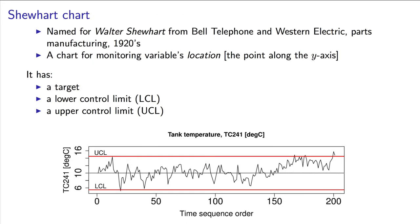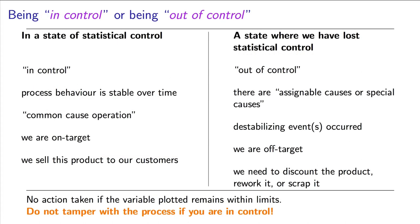This chart that we've just used is called the Shewhart chart, named after Walter Shewhart from the Bell Telephone Company, who developed it in the 1920s to monitor the production of parts at the phone company. It is a chart for monitoring the location of a variable — where it lies on the vertical axis. Shewhart charts often have a lower and an upper control limit, as well as a target line drawn on them. A process is considered to be in control if it lies within those limits. We call the variation within the limits common-cause variability.